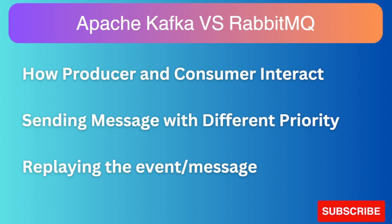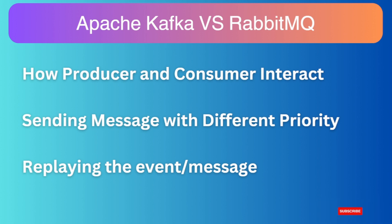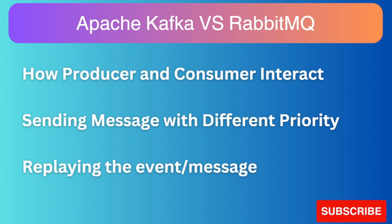Another difference is setting message priority. RabbitMQ brokers allow producers to escalate certain messages by using a priority queue. Instead of sending messages in first-in-first-out order, the broker processes high-priority messages ahead of normal messages. For example, a retail application might queue sales transactions every hour, but if the system administrator issues a priority backup message, the broker sends it immediately. Unlike RabbitMQ, Apache Kafka does not support priority queues — it treats all messages as equal when distributing them to the respective partitions.